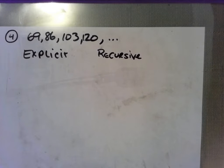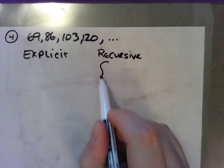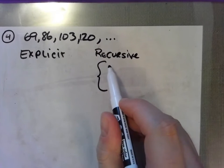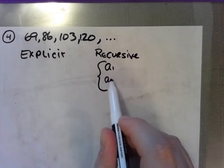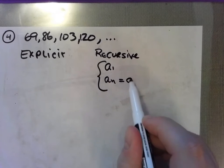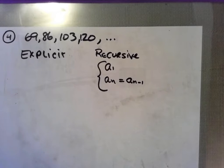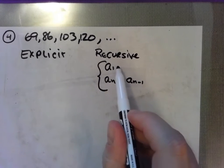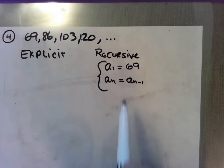I wanted to show you the difference between writing an explicit and a recursive formula. The explicit formula uses the first term and the difference, and so does the recursive formula. We might have noticed in our last section the recursive formula always looks the same and starts the same way with the value of your first term and the next term being defined by what happens to the previous term. It seemed very convenient to write your recursive formula.